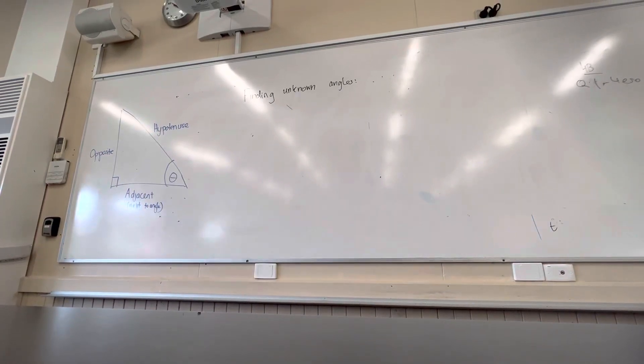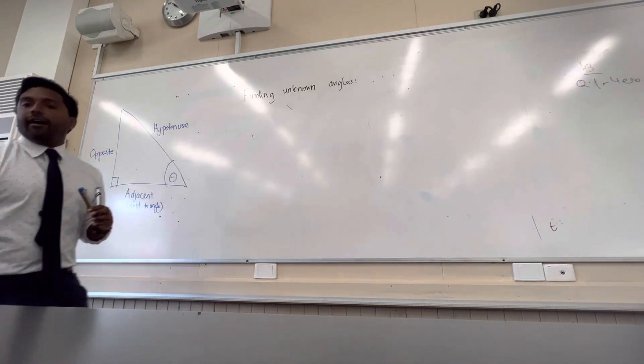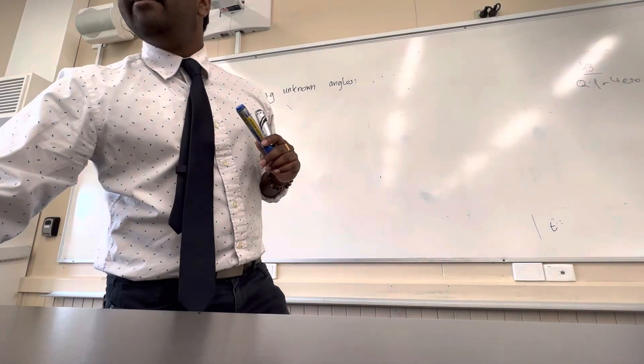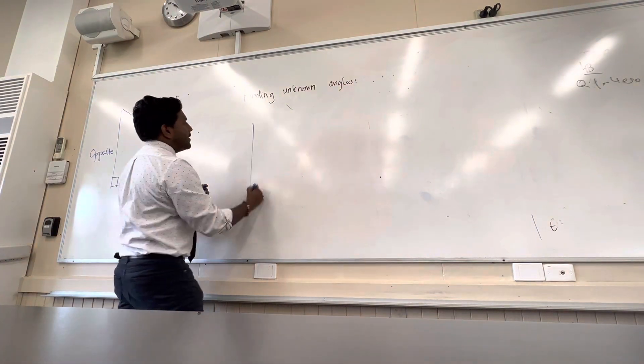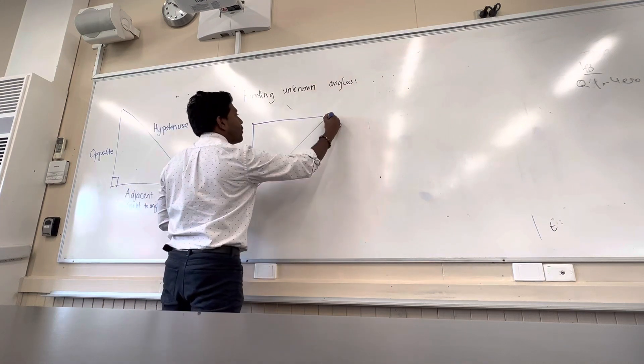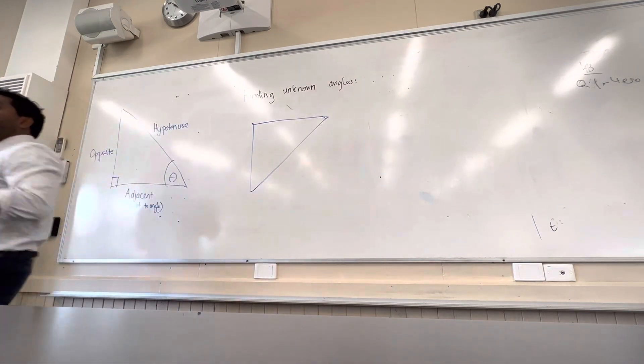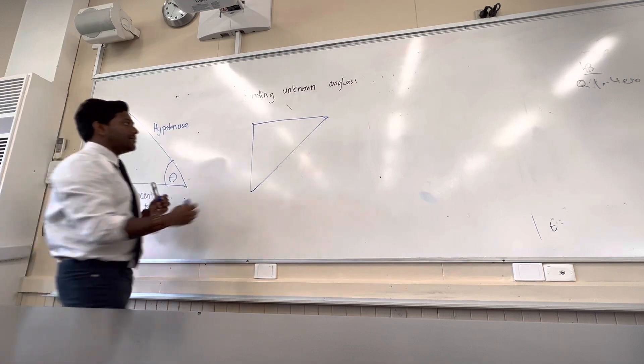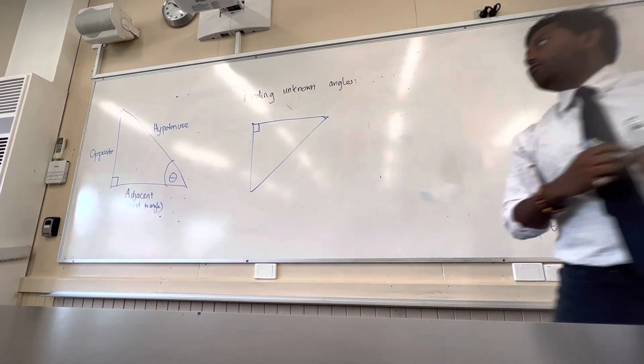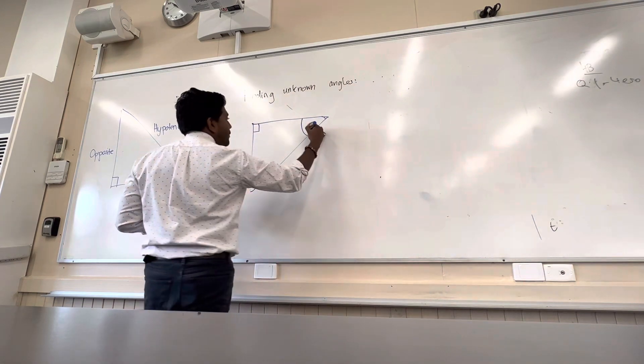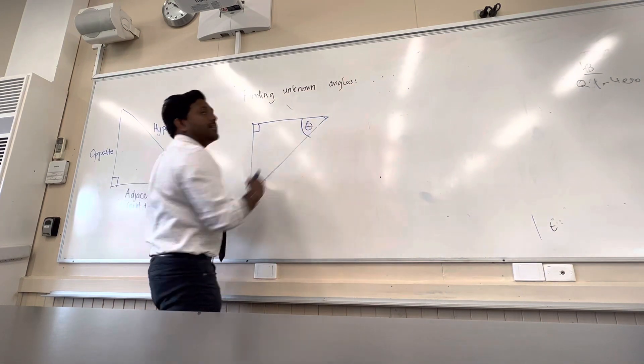So this is all about finding unknown angles. If you had a triangle, what specific type of triangle should it be, Arjun? This whole topic is specifically talking about a particular triangle - right angle triangle, great.